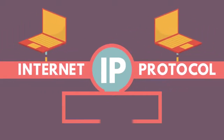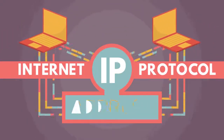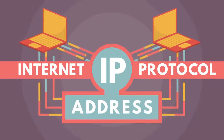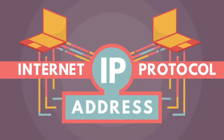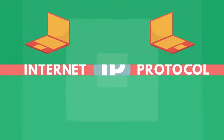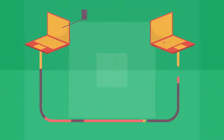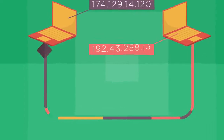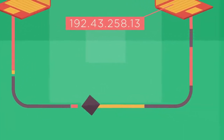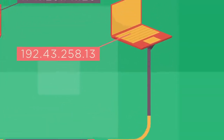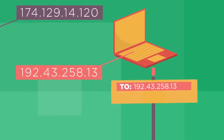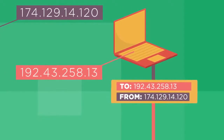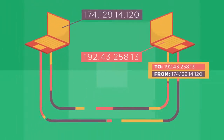This protocol is simply called the Internet Protocol, or IP. A computer's address is then called its IP address. Visiting a website is really just your computer asking another computer for information. Your computer sends a message to the other computer's IP address, and it also sends along its origin address, so the other computer knows where to send its response.